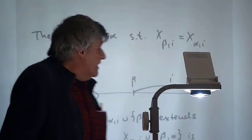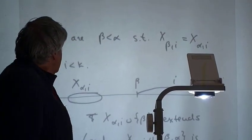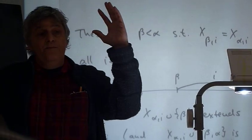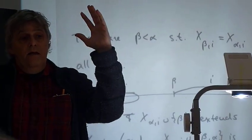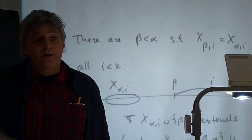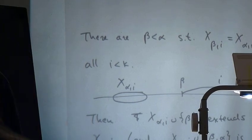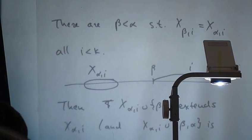So there must be two elements, beta and alpha in S prime, so that the whole sequence are identical for beta and alpha. So for every i less than kappa, x beta i is equal to x alpha i.